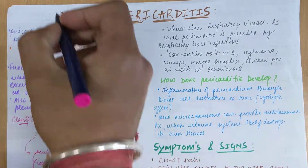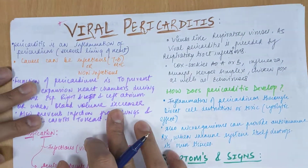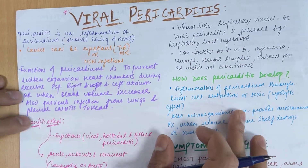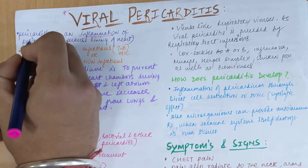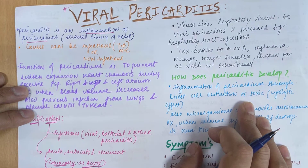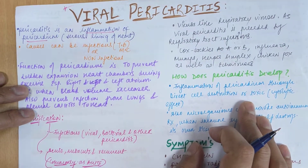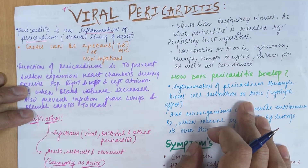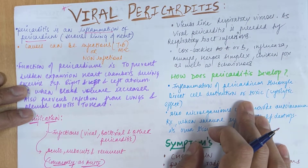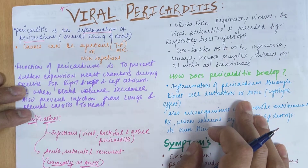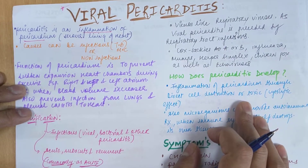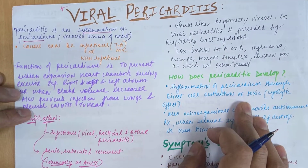In this video we'll be discussing viral pericarditis. Pericarditis means inflammation of the pericardium, which is the serous lining — the outer covering — of the heart. Viral pericarditis is caused by viral infections, so if a patient is suffering from any type of respiratory viral infection, after two to three weeks they have chances of developing pericarditis, which is then called viral pericarditis.